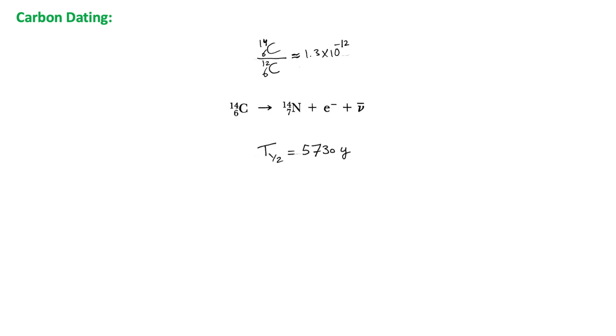By determining the proportion of radiocarbon to ordinary carbon, it is possible to evaluate the ages of ancient objects and remains of organic origin. This method makes it possible to date mummies, wooden implements, cloth, and similar artifacts from ancient civilizations as old as 50,000 years, which is about nine half-lives of radiocarbon.